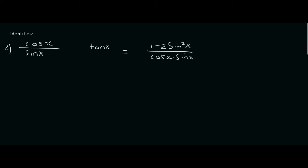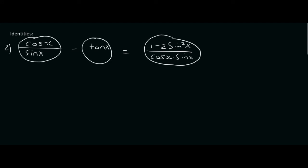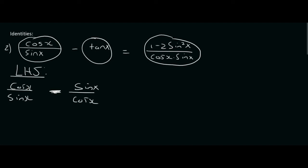In the previous question, the important thing to realize is fractions. Now here we have a left hand side and a right hand side. The right hand side is one term, and this over here is two terms. So you're typically going to start on the side that has more terms, because that's easier to simplify. Working on the left hand side, we know that tan x is the same as sin x over cos x. That's a minus sign there. You've got two fraction terms, so you need a lowest common denominator — in this case, it's sin x times cos x.